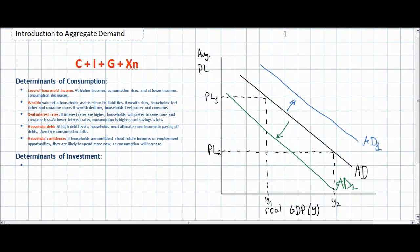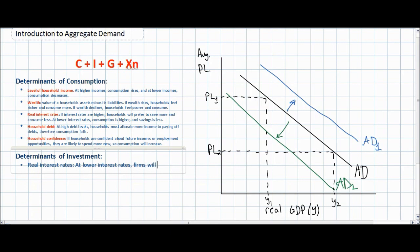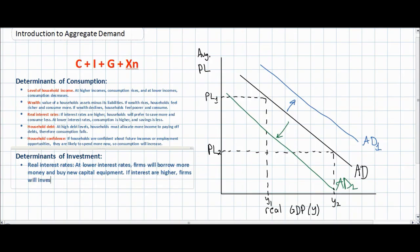The second type of private spending contributing to aggregate demand is investment, which refers to spending by firms on capital equipment. The most important factor affecting domestic investment is real interest rates. At lower interest rates, firms will borrow more money and buy new capital equipment, allowing them to demand more capital goods, employ more workers, and contribute to overall economic activity. At higher interest rates, borrowing costs are greater, so firms will invest less.